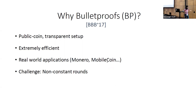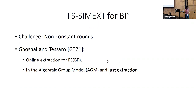There is one challenge when considering simulation extractability here: bulletproofs has a non-constant number of rounds. At the time of writing, the only known way to prove simulation extractability was via a naive reduction from interactive to non-interactive, resulting in an exponential blow-up in the number of rounds — not good for bulletproofs or any non-constant-round protocol. Recently, work by Gershal and Tessaro at Crypto circumvented this blow-up by considering a stronger definition of online extraction, proved in the AGM model. However, that work only addresses extraction, not the stronger property of simulation extractability.